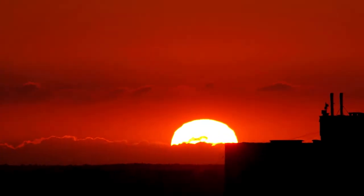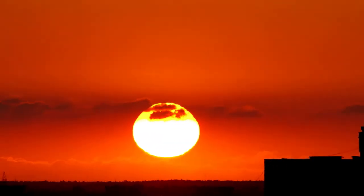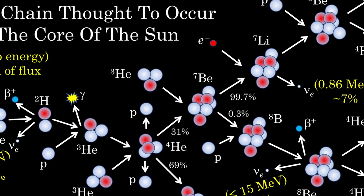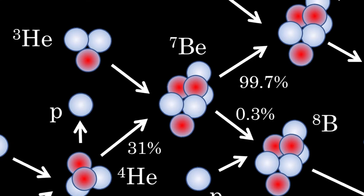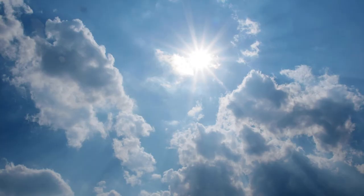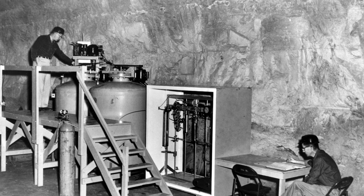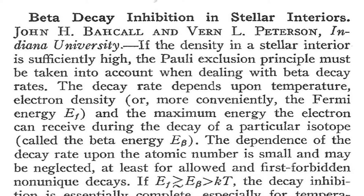But then, in 1958, a break. Harry Holmgren and R.L. Johnson of the Naval Research Laboratory find that helium-3 and helium-4 fuse together to form beryllium-7 100 times faster than had been thought. This means the Sun should be producing a significant number of neutrinos with energy of 0.86 MeV — above the chlorine-37 reaction threshold. With this revelation, Davis' colleagues William Fowler and Alastair Cameron encourage him to continue looking for solar neutrinos with his chlorine-37 detector. Davis is aware of some work Bacall has recently done and asks for his help in determining the beryllium-7 reaction rate in the Sun and the neutrino flux it produces.